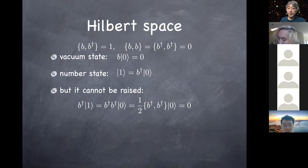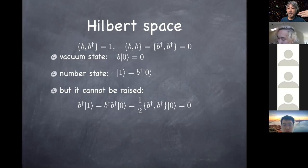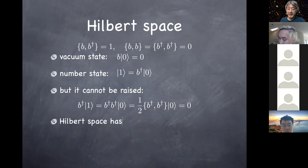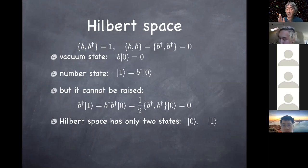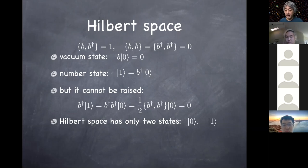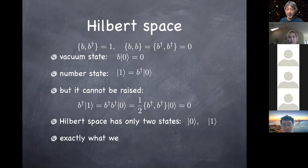Now you have a Hilbert space consisting of only two states: vacuum state |0⟩ and the raised state |1⟩, and you can't raise it further. For every mode of the fermion, you have this two-dimensional Hilbert space — exactly what you wanted. You have a binary choice of whether the state is occupied or not. Vacuum state |0⟩ describes unoccupied, and one-particle state |1⟩ describes occupied. There are no other possible states for a fermion.